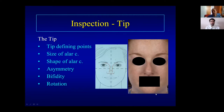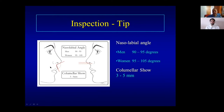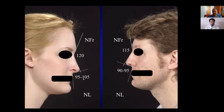There are many tip names: boxy (like a box), bifid, bulbous (like a ball), and amorphous — where the skin is so thick you can't see the tip. The nasal labial angle determines tip rotation: in men it should be 90 to 95 degrees; in women it should be more open — 95 to 105 degrees. You also look at the columellar show: the distance between the anterior and posterior vestibule lines should be about 4mm on average, maximum 5mm.